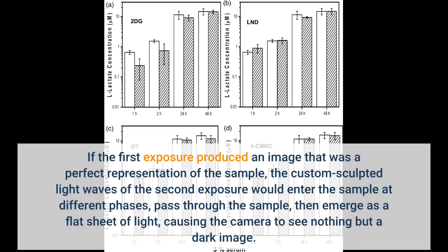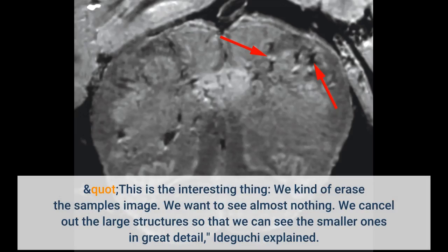If the first exposure produced a perfect representation of the sample, the custom sculpted light waves of the second exposure would enter the sample at different phases, pass through the sample, then emerge as a flat sheet of light, causing the camera to see nothing but a dark image. This is the interesting thing — we kind of erase the sample's image. We want to see almost nothing. We cancel out the large structures so that we can see the smaller ones in great detail, Idiguchi explained.